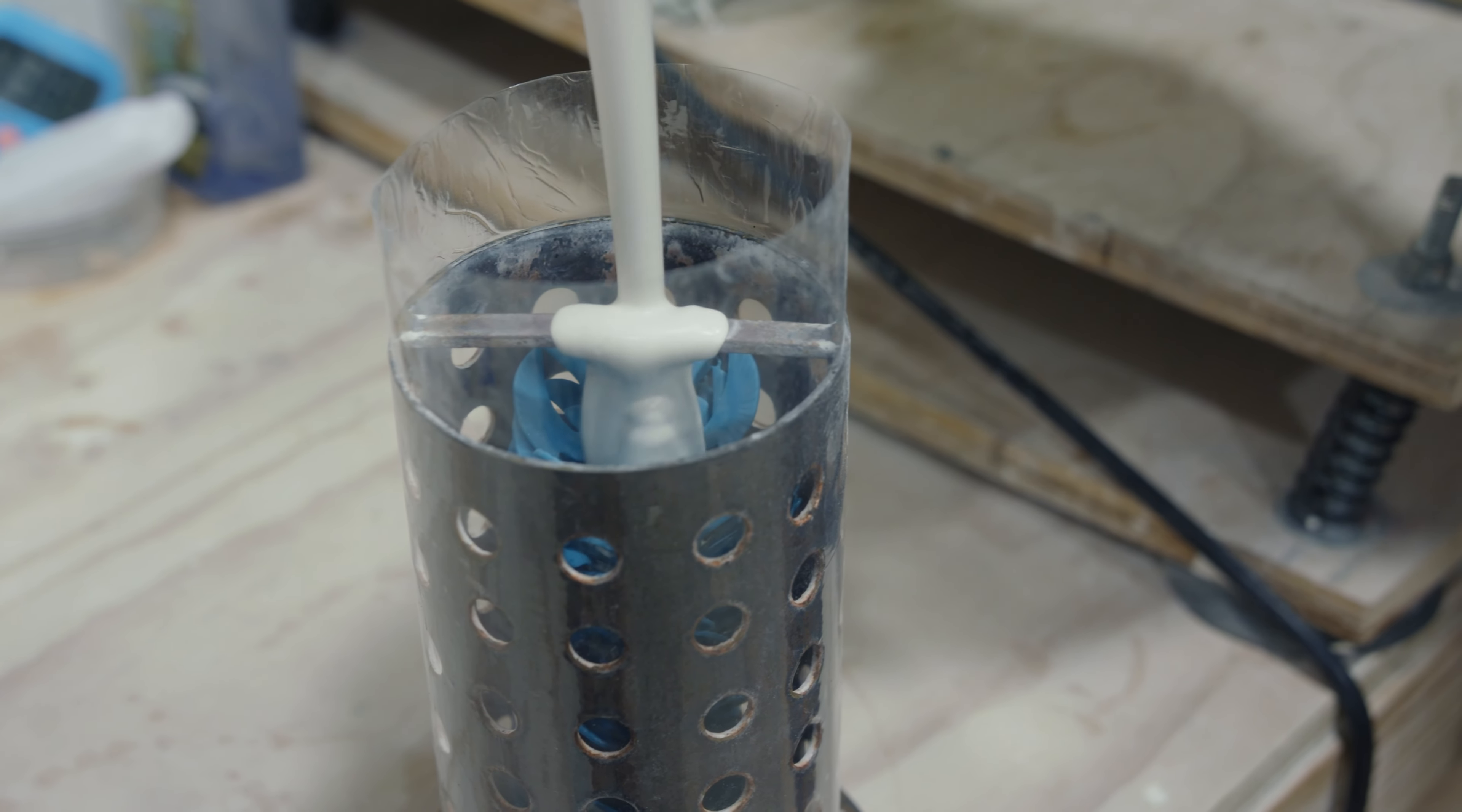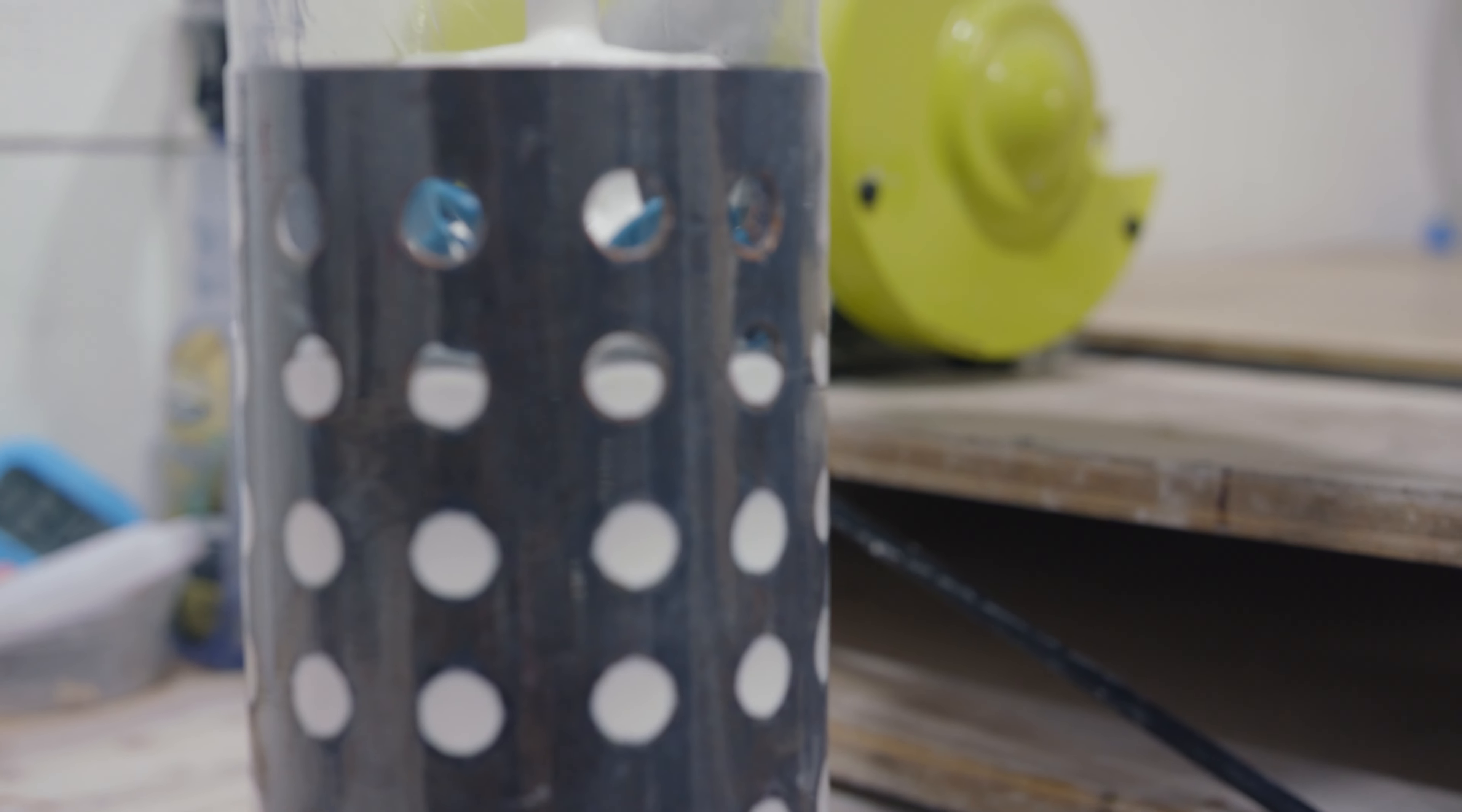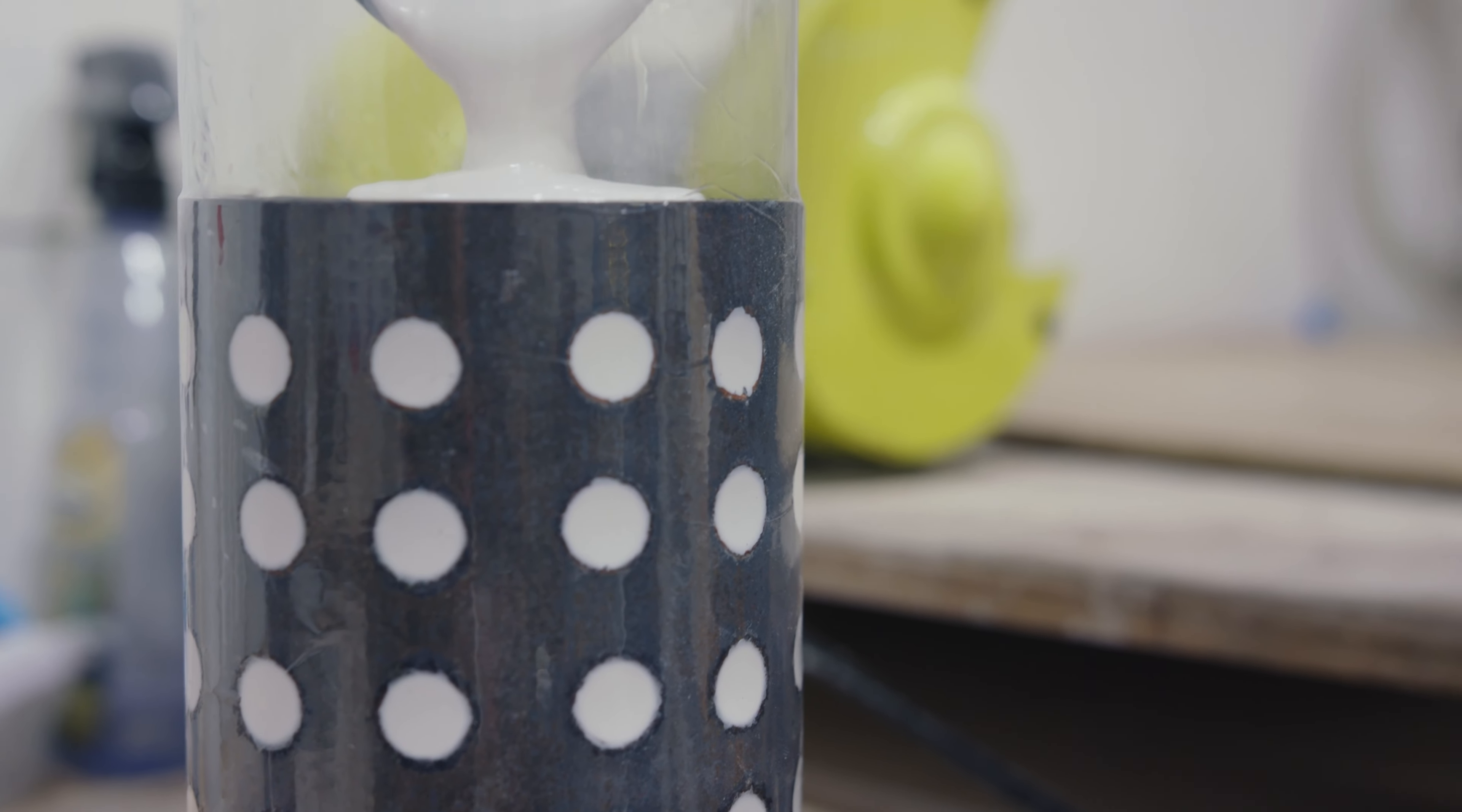A plaster like mold material called investment is poured into the top of the flask. This material hardens to make a solid shell around the wax tree.